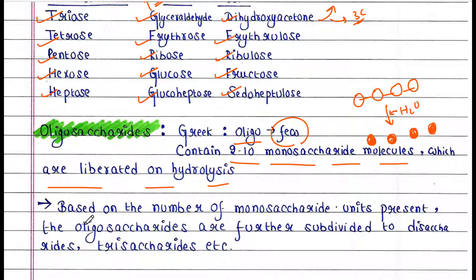Based on the number of monosaccharide units present, the oligosaccharides are further subdivided to disaccharides, trisaccharides, etc. That means in the oligosaccharide if 2 monosaccharide units are present it would be named disaccharide. If 3 monosaccharides are present it would be named trisaccharides.